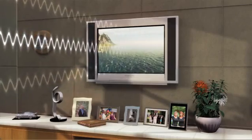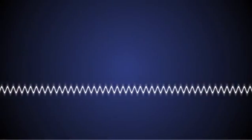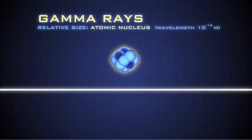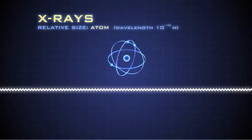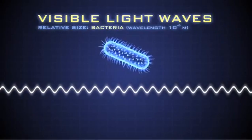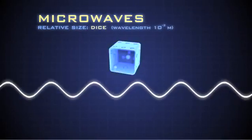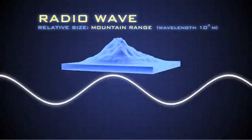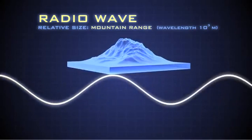Electromagnetic radiation. These waves spread across a spectrum from very short gamma rays to X-rays, ultraviolet rays, visible light waves, even longer infrared waves, microwaves, to radio waves which can measure longer than a mountain range.